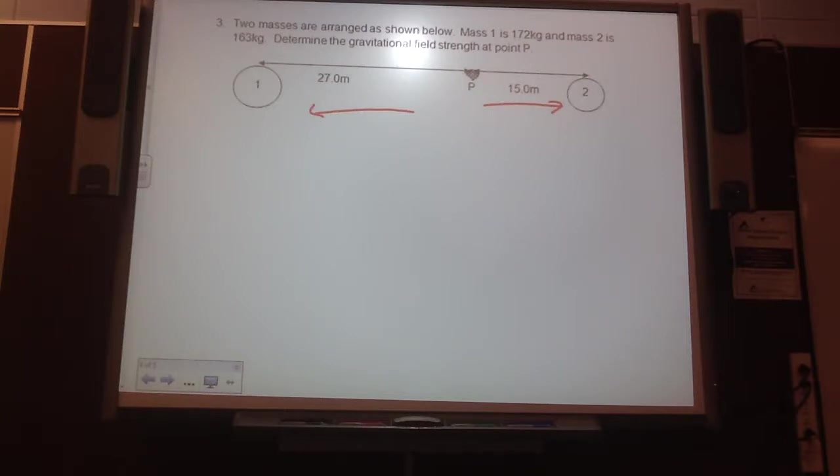So whichever side pulls with more force is going to be the direction of the overall field strength, right? So we need to look for G net, the overall. Just like what we did with forces and kinetics, we need to look at the net, the overall impact.